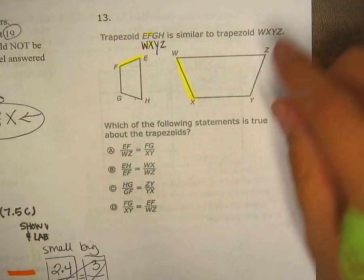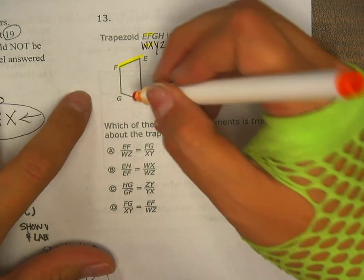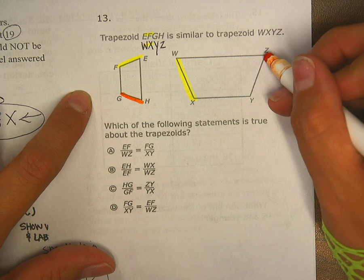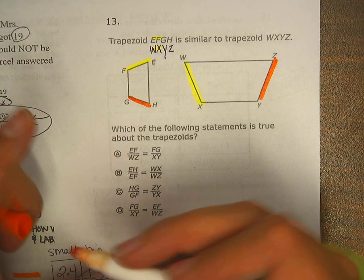And then let's look at the last two, which is GH. This little guy over here matches up with YZ, that little guy right there.